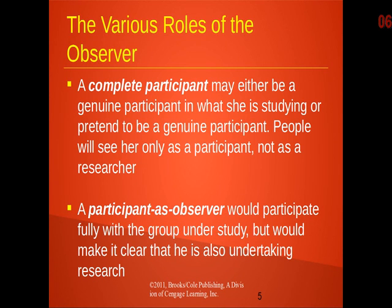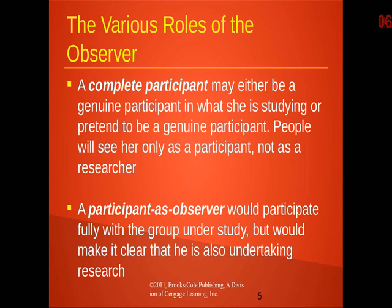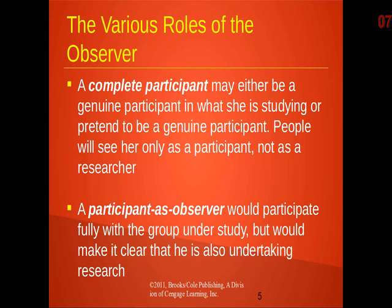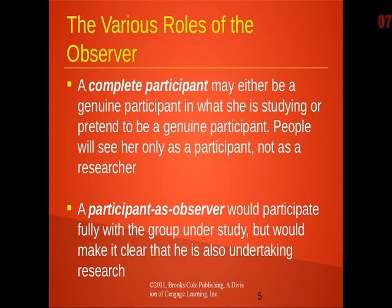One step up the ladder of disclosure is the participant as observer role. In this situation, you might be studying a social process — say, the mechanisms by which the Tea Party movement recruited people who would seemingly have their best interests not served by the Tea Party. You go to Tea Party rallies, participate in their phone banks, do everything they do, but let them know you're there as a researcher. You would only be in the participant as observer role if you were already a supporter of the group.